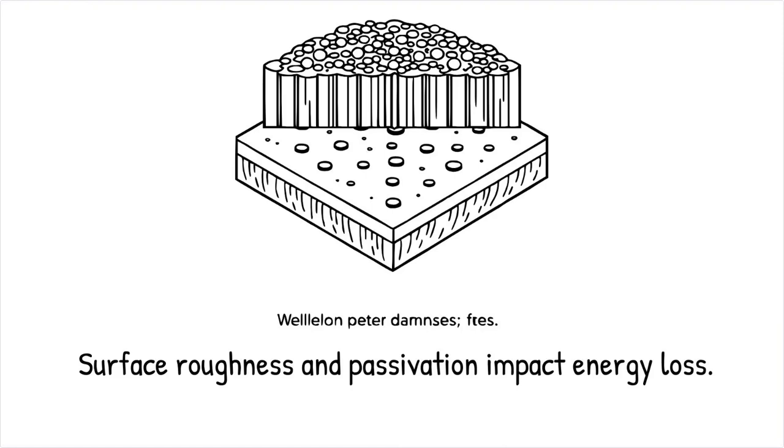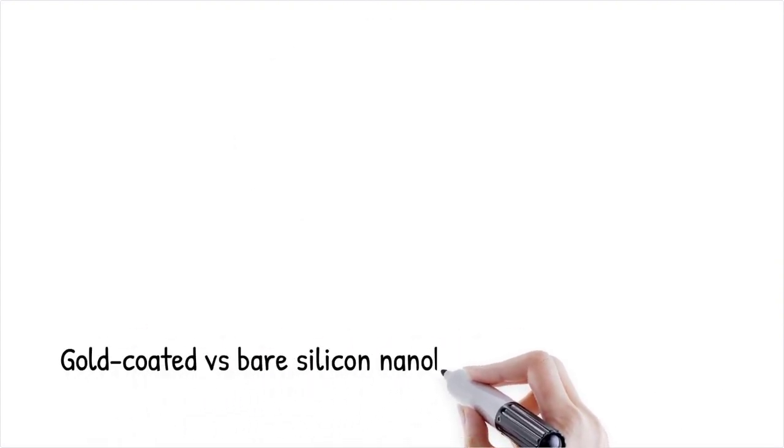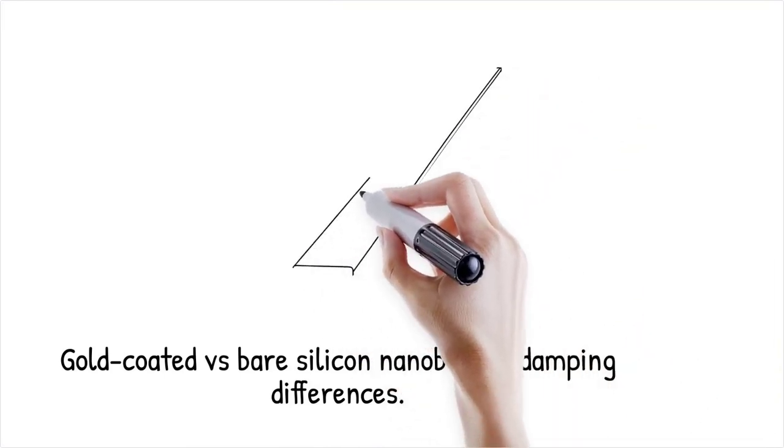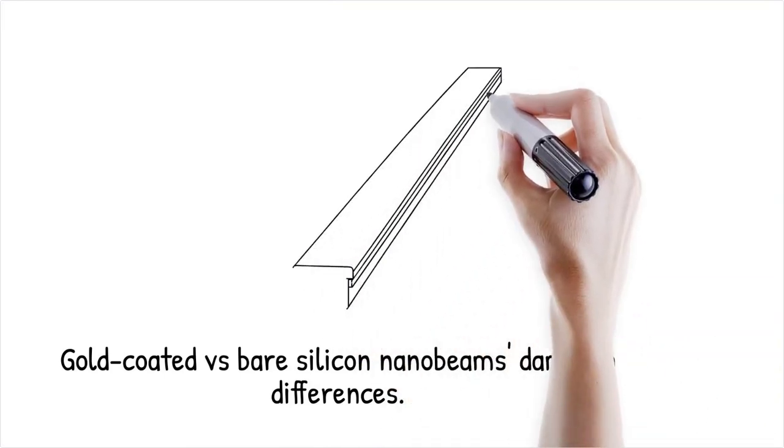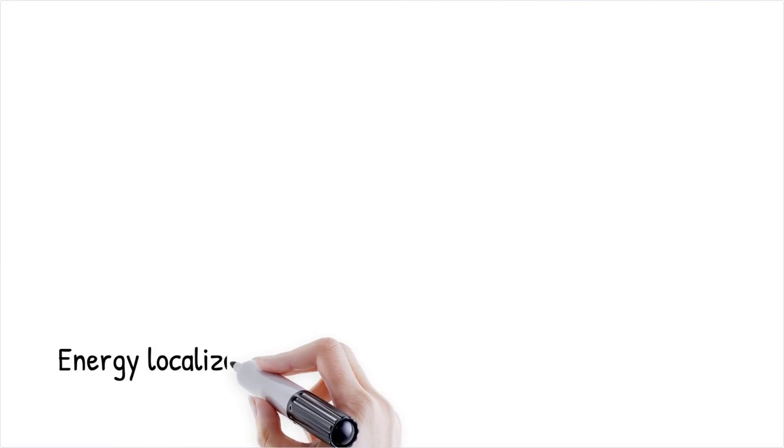Gold-coated silicon nanobeams, for instance, exhibit vastly different damping behavior compared to bare silicon beams, highlighting the role of surface modifications. This is like a smooth ice rink. If it becomes covered with microscopic bumps or contaminants, skaters experience unpredictable resistance.